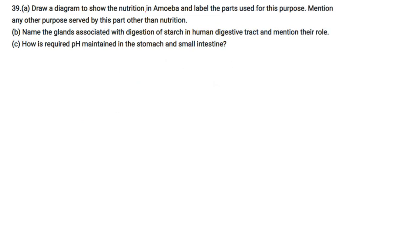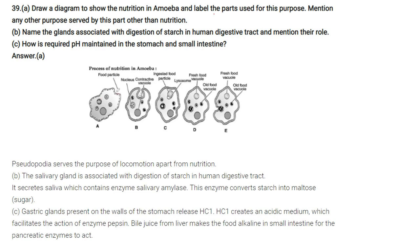Draw a diagram to show the nutrition of amoeba and label the parts used. The diagram shows different phases with the food particle, contractile vacuole, nucleus, ingested food particle, lysosome, fresh food vacuole, and old food vacuole. The old food vacuole is eventually discarded by rupture of the membrane. Pseudopodia serve the purpose of locomotion in addition to nutrition.